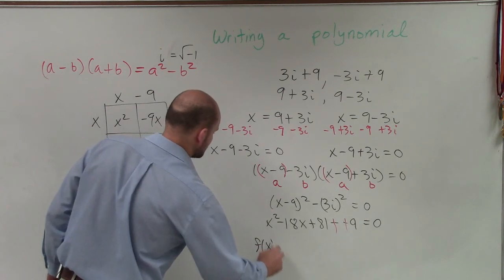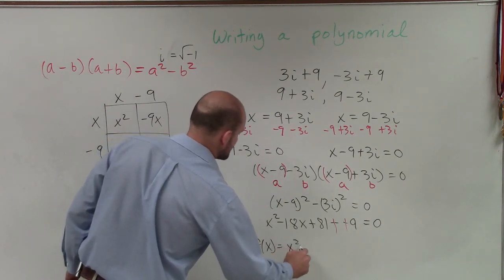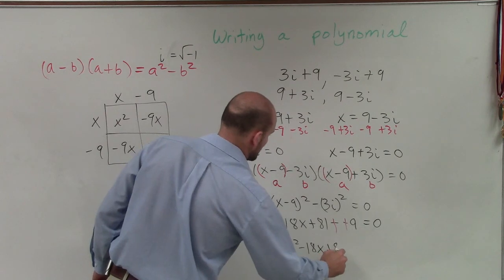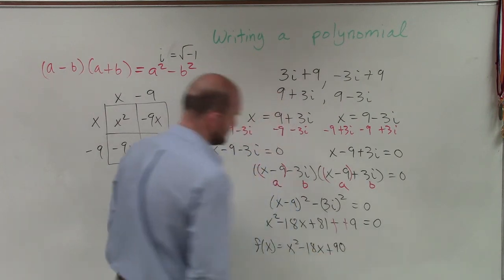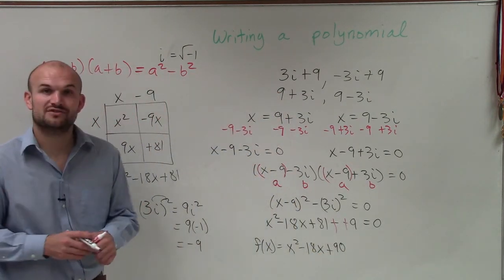I have f of x equals x squared minus 18x plus 90. And that's our final function value. Thanks.